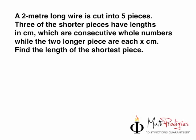But first, let's see this. A 2 meter long wire is cut into 5. Three of the shorter pieces have length in cm, which are consecutive. Very important word in this question is consecutive. While the 2 longer pieces are each x cm. Find the length of the shorter piece. First of all, you want to find out what is the left over, which forms the 3 pieces of wire.